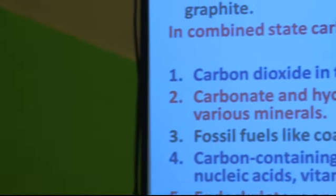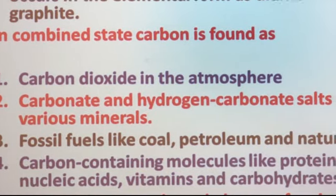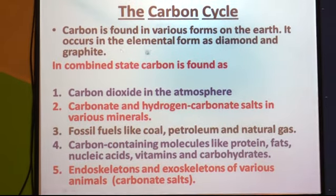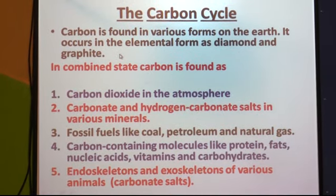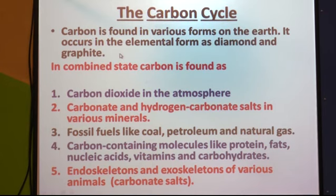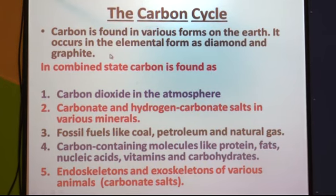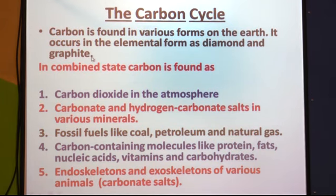Today we will discuss about one such important biogeochemical cycle — the carbon cycle. Carbon is found in various forms on the earth. It occurs in the elemental form as diamond and graphite, which are allotropes of carbon. Diamond is the hardest substance and graphite is used in many processes. These are the allotropic forms of carbon.